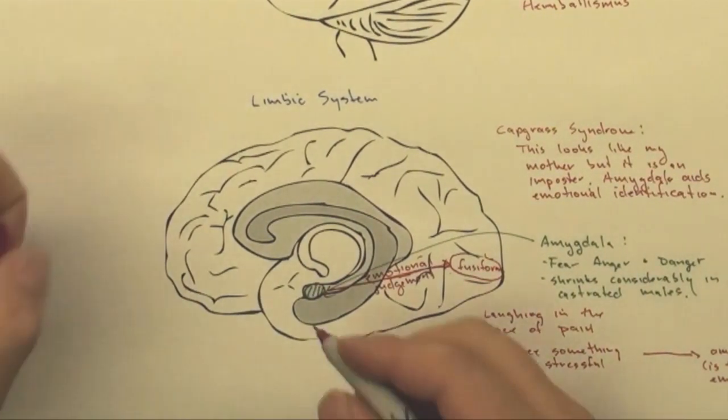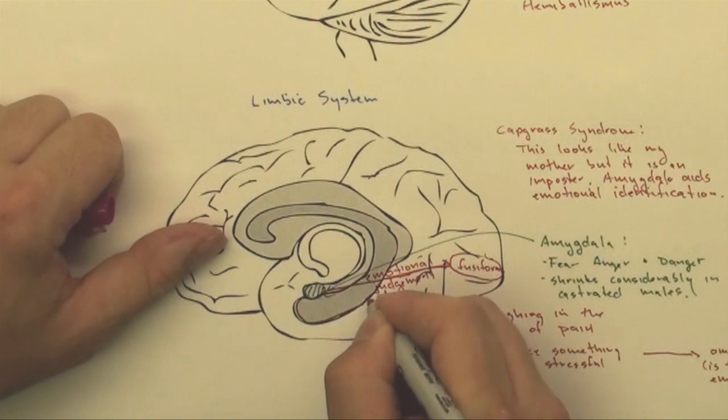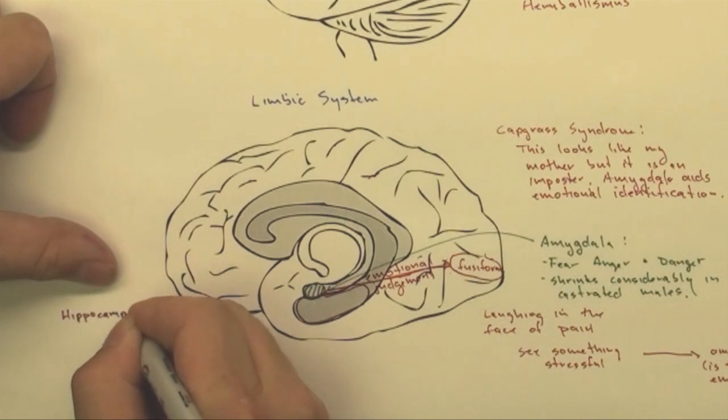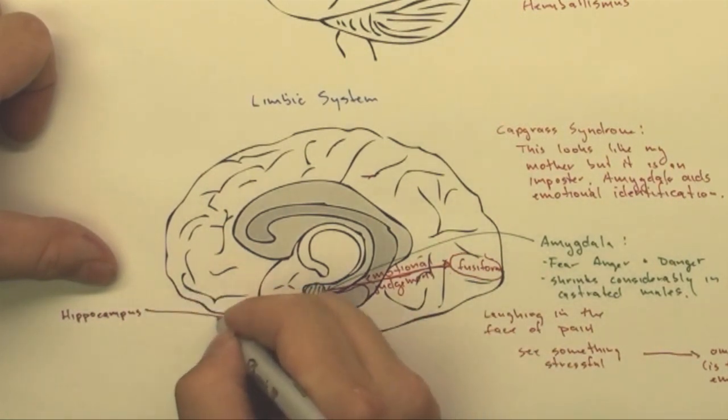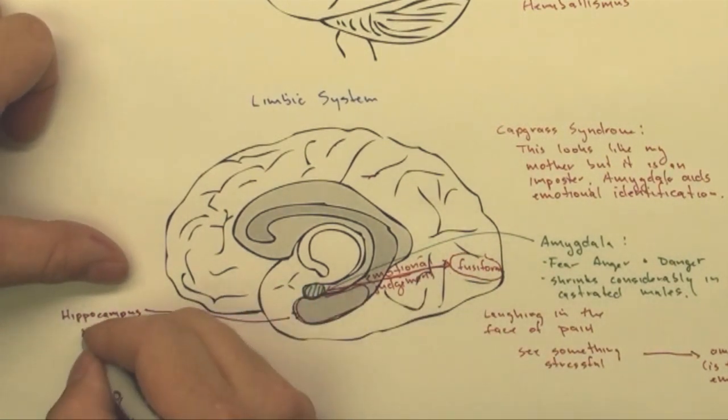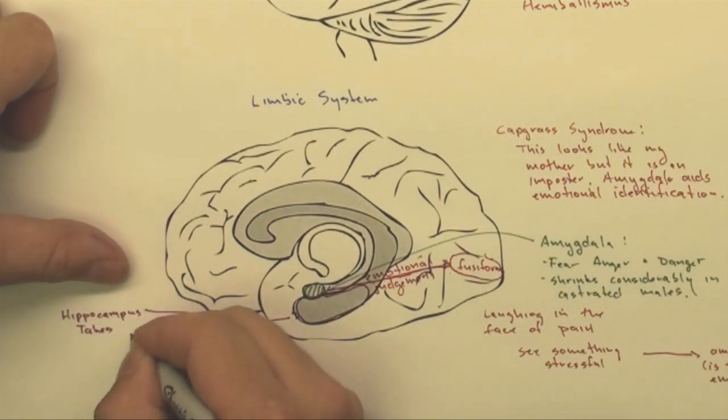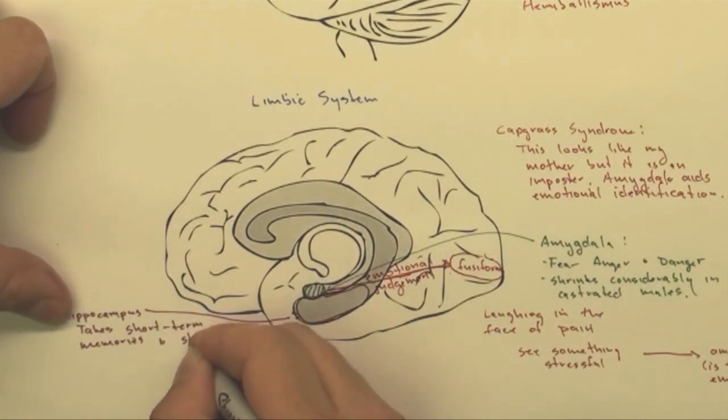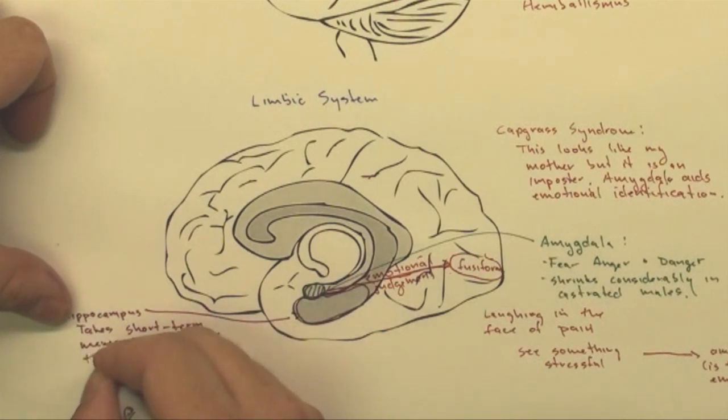I'm going to come over here to something called the hippocampus. The hippocampus is responsible for taking short-term memories and storing them as long-term memories.